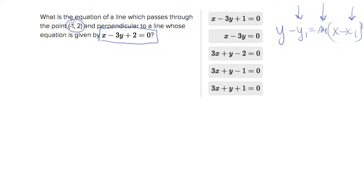So they give us a point, negative one and two. So y1 and x1, we already know what to plug in for that. The only thing we don't know is m, the slope.